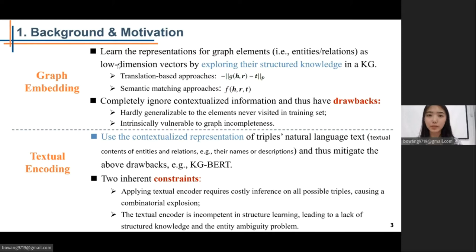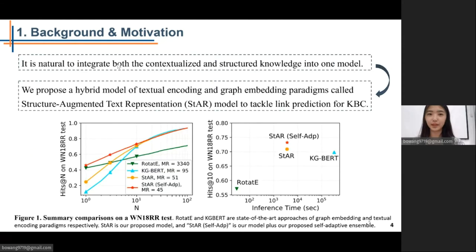Textual encoding approaches predict the missing paths for KGC using the contextualized representation of triples' natural language text. However, they are limited by two inherent constraints. Applying textual encoder to link prediction requires costly inference on all possible triples, causing a combinatorial explosion. The textual encoder is incompetent in structured learning, leading to a lack of structured knowledge and the entity ambiguity problem. Based on the advantages and drawbacks of these two paradigms, it is natural to integrate both the contextualized and structured knowledge into one model. Therefore, we propose a hybrid model of textual encoding and graph embedding paradigms called Structured Augmented Text Representation Model to tackle link prediction for KGC. We call it STAR for short.